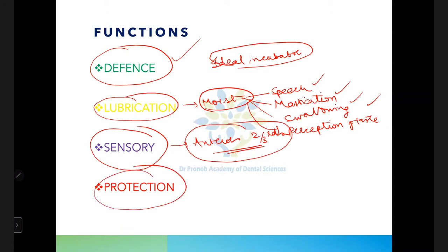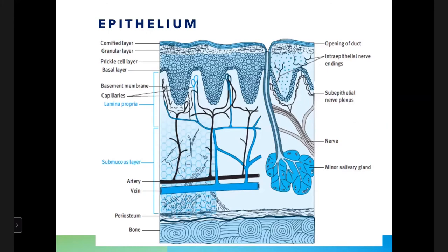The last function of oral mucosa is protection. It lines the oral cavity, protecting the deeper tissues from anything that enters the cavity.